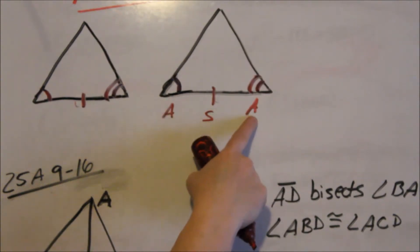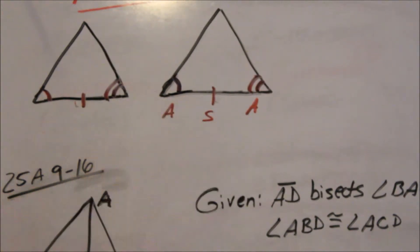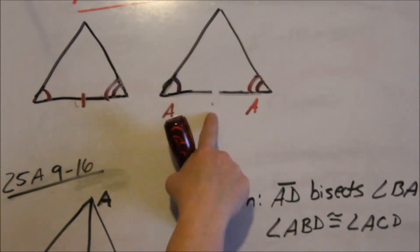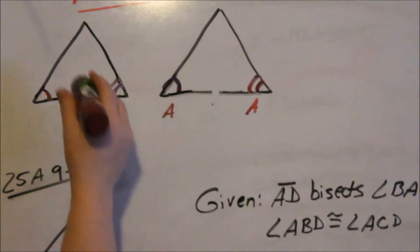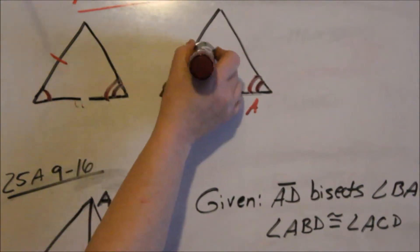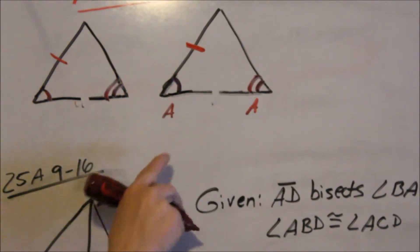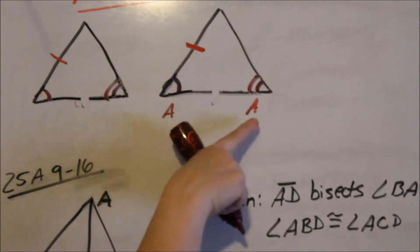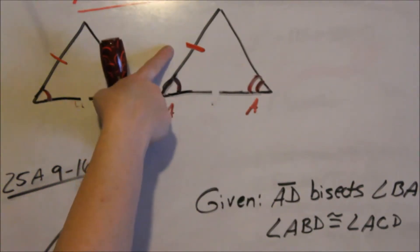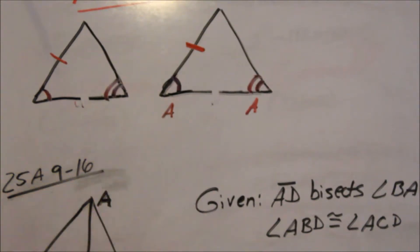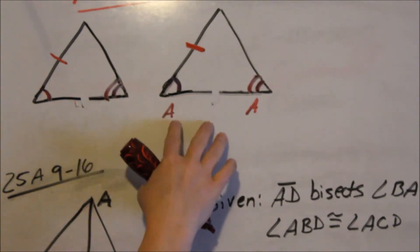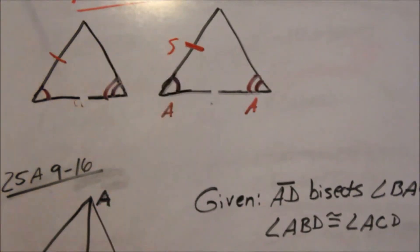Angle, side, angle — the side has to be in between the two angles. If you want to use angle, angle, side, let's say that this side is congruent instead. You use angle, angle, side when the side is not in between the two angles. So to prove these two triangles congruent, you would use AAS because there's your side.